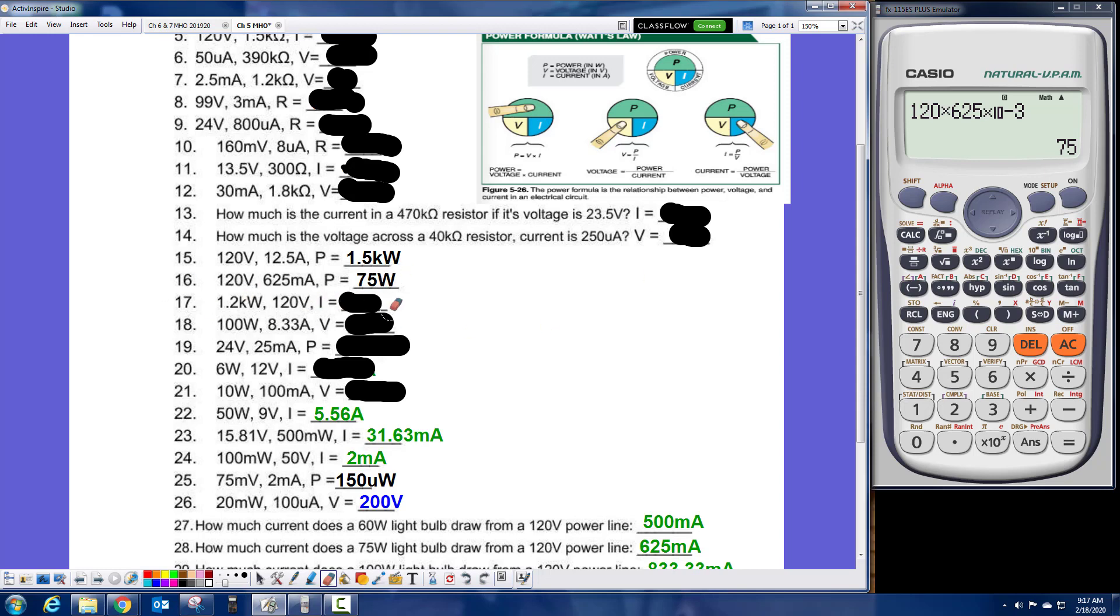And the next one, I'm looking for current. So if I'm looking for current, I cover up current and it's P divided by V. So the P goes on top, 1.2 kilowatts divided by the V of 120 volts, giving me 10. And I was looking for current, so it's 10 amps.